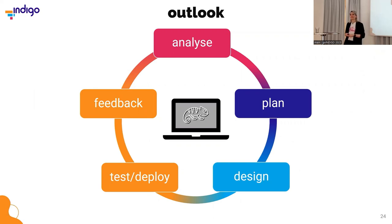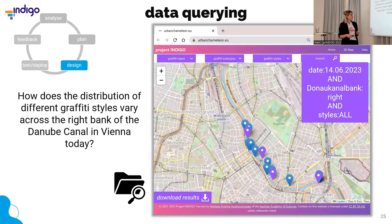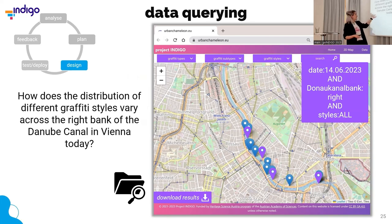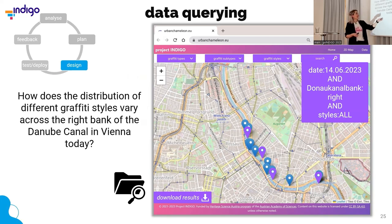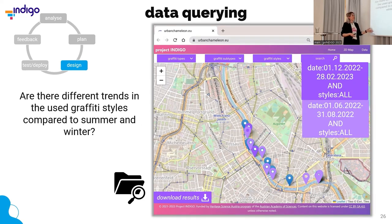Now comes the outlook of what is still in the pipeline to do — the last two steps of the circle. We want to be able to query all the data, so we have to make sure that if we have a research question like the ones I showed you at the beginning, we can get information. We should be able to click the information we want — such as the right bank of the Danube Canal — and select all styles, then get a result and download it. The same for the other question, where we can determine different time spans and even have different queries comparable to each other.